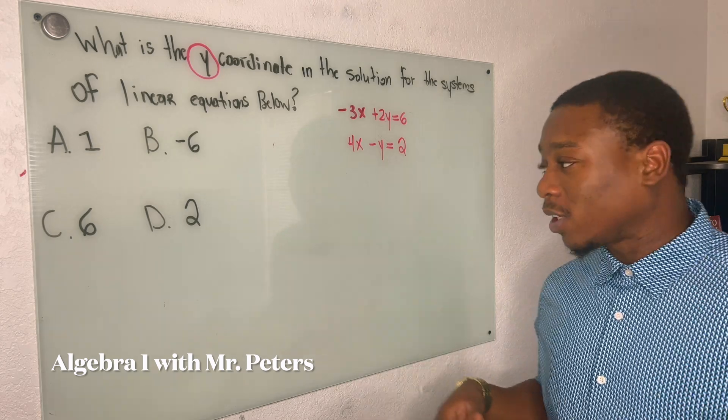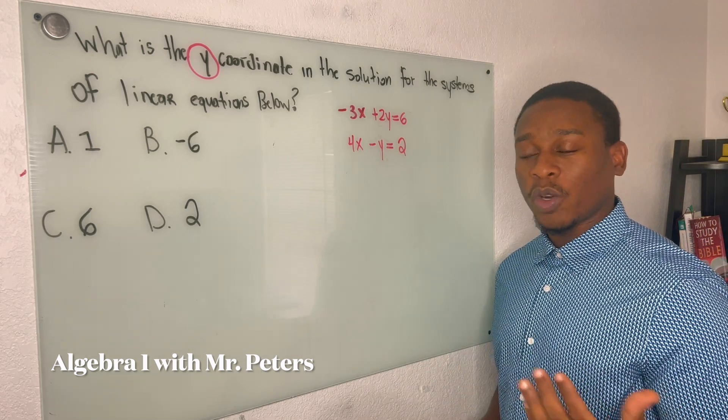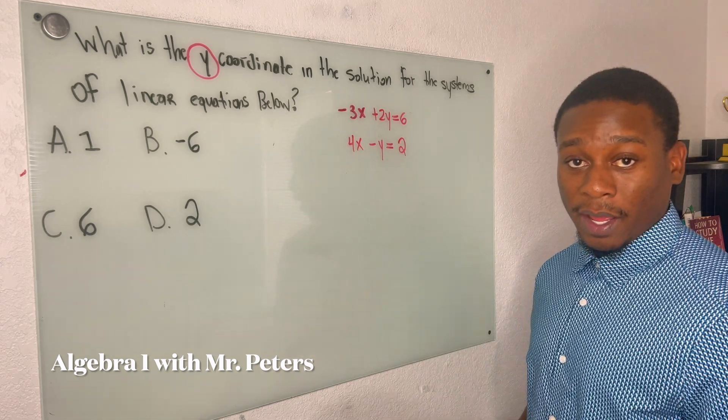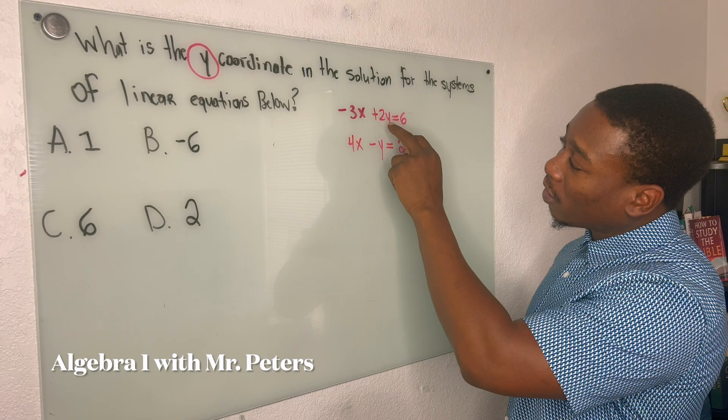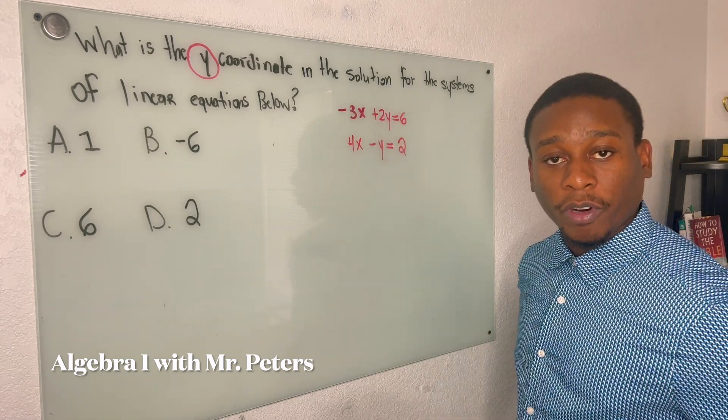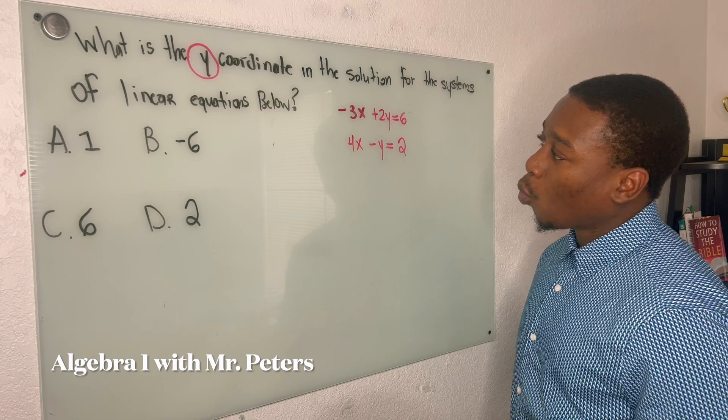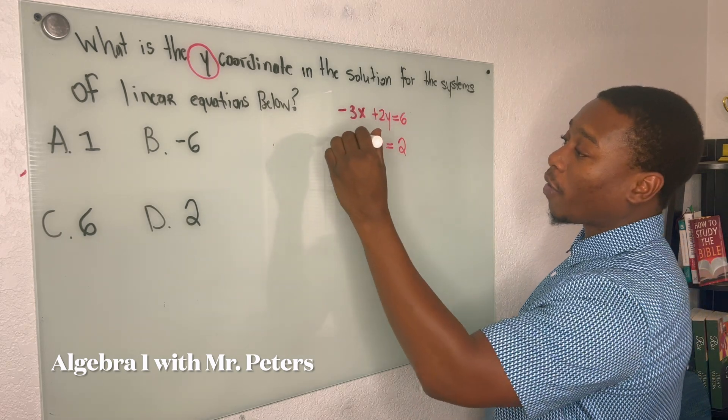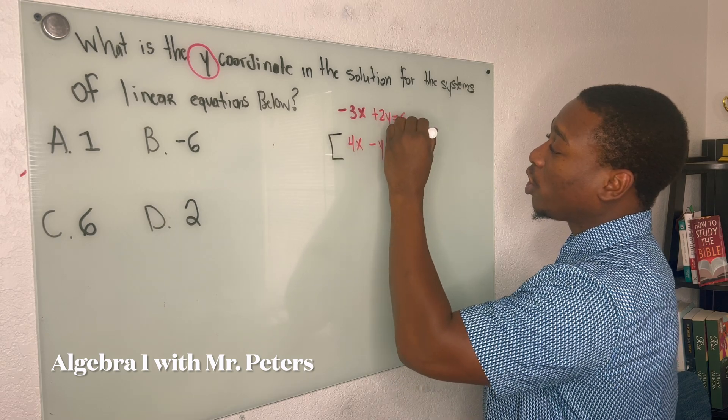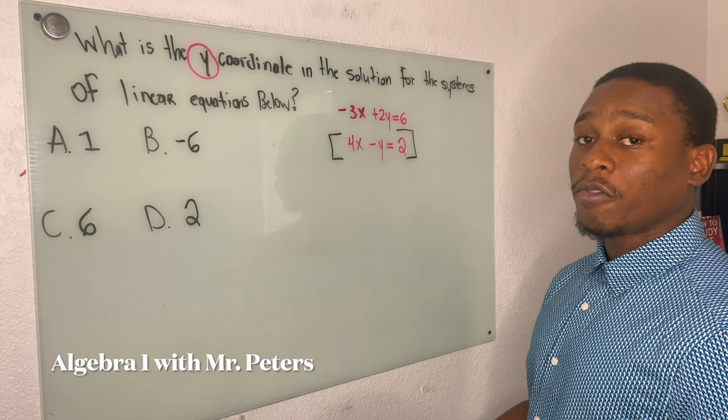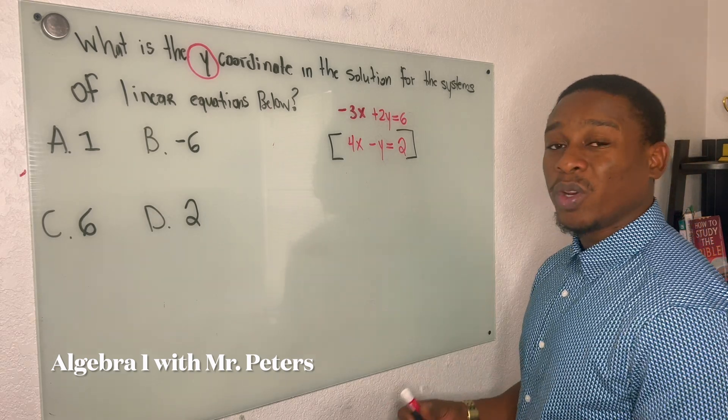So let's break this down. When we're looking for the solution, we normally want to find x and y. But they told us to focus on y. So when we look at our y's, we don't have the same number in front, that same coefficient. But I noticed that one is positive and one is negative. So if I multiply my bottom equation by 2, they could get the same coefficient.